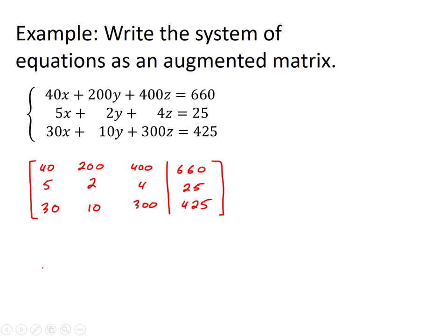So we have a 3 by 4 matrix. First row is 40, 200, 400, 660. Second column corresponds to the second equation: 5, 2, 4, 25. And the last row corresponding to the third equation: 30, 10, 300, and 425.